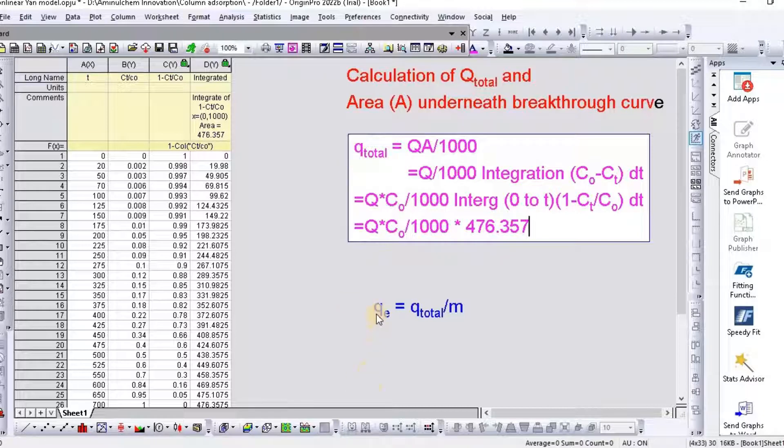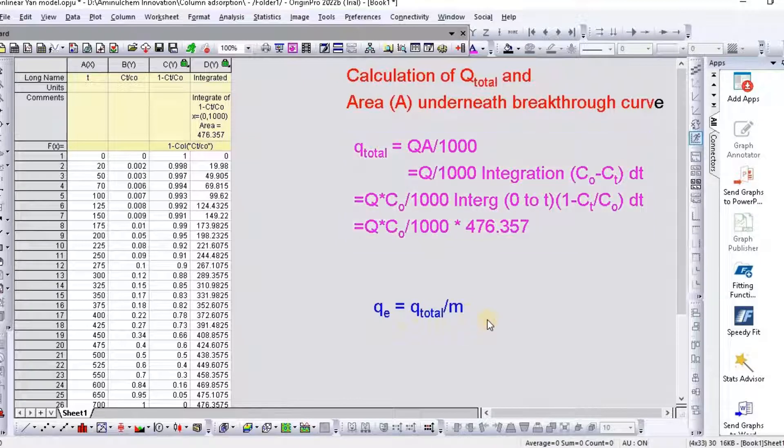So after this, you can also calculate QE equal to Q total divided by M. So this is how you can easily calculate area underneath breakthrough curve using Origin Pro.